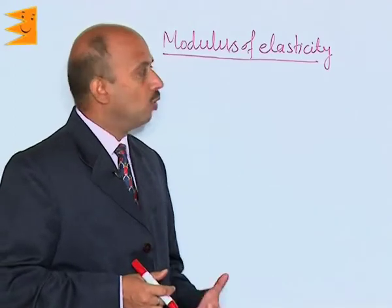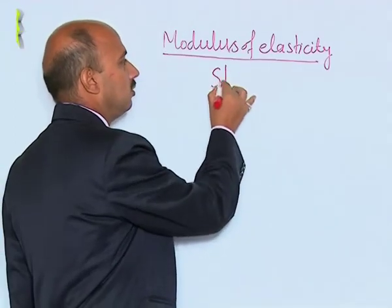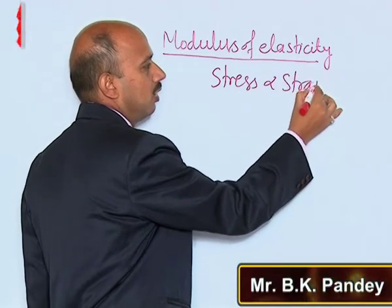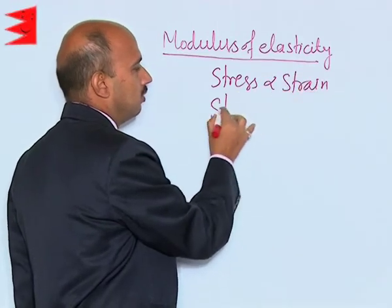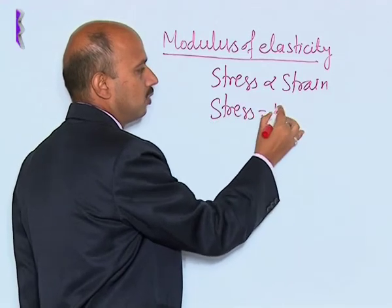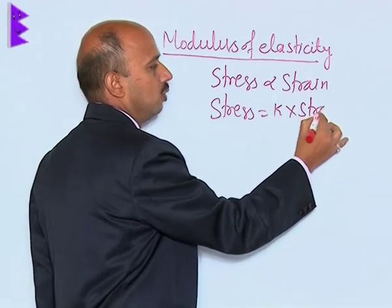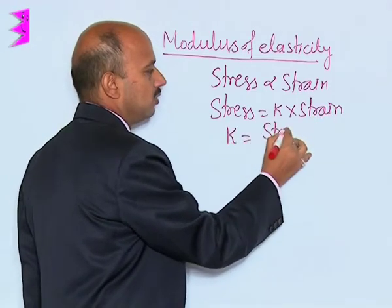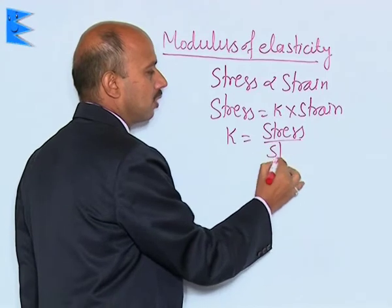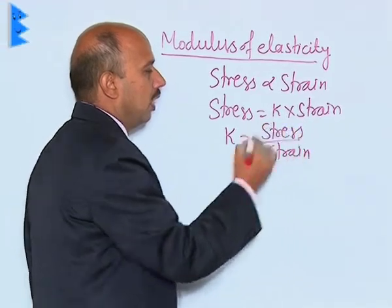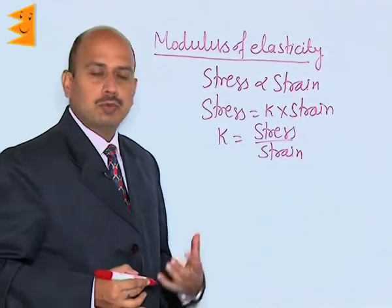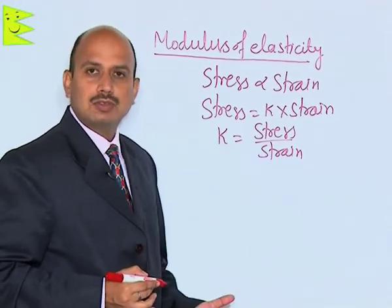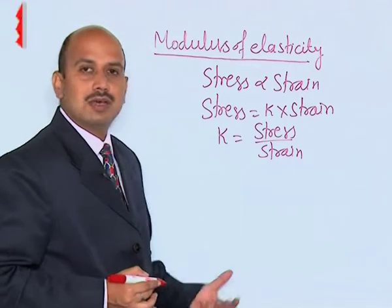According to Hooke's law, stress is directly proportional to strain. This can be written as stress is equal to a proportionality constant k into strain, and k is equal to stress upon strain. This k is known as the coefficient of elasticity, or proportionality constant, or modulus of elasticity.